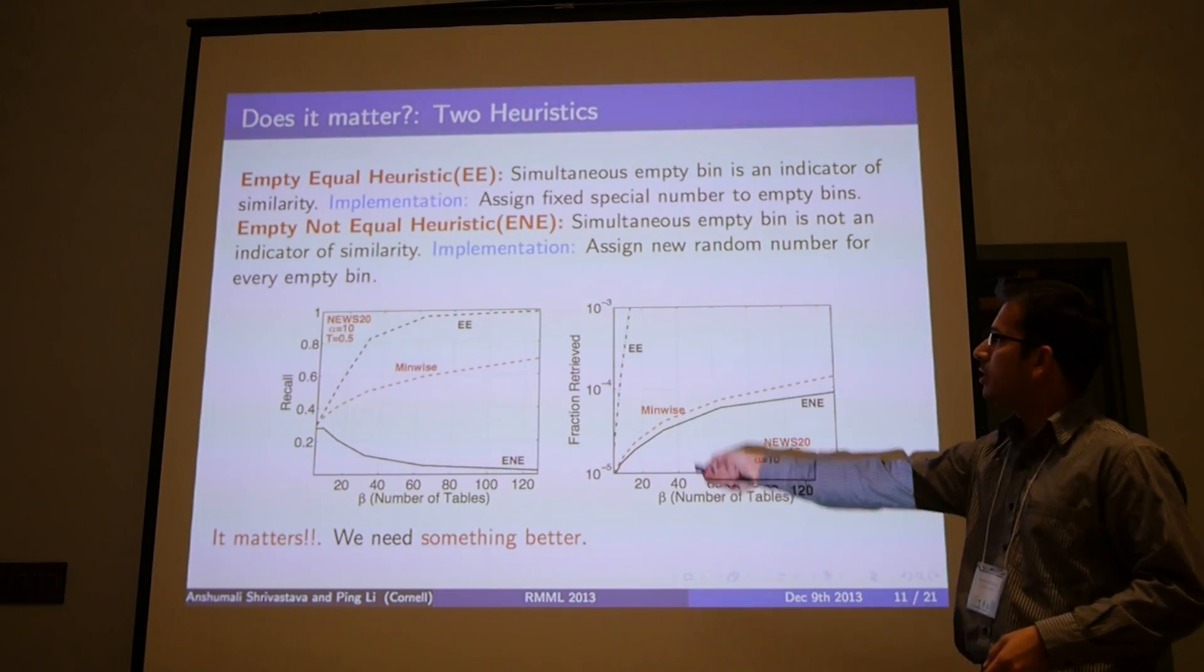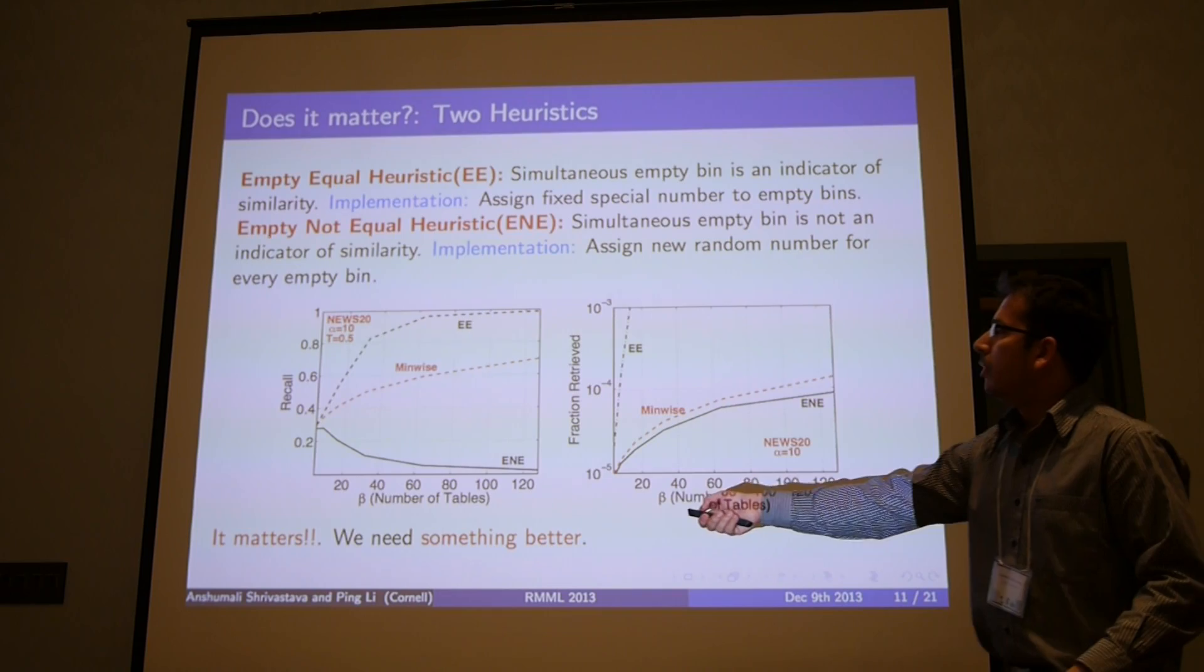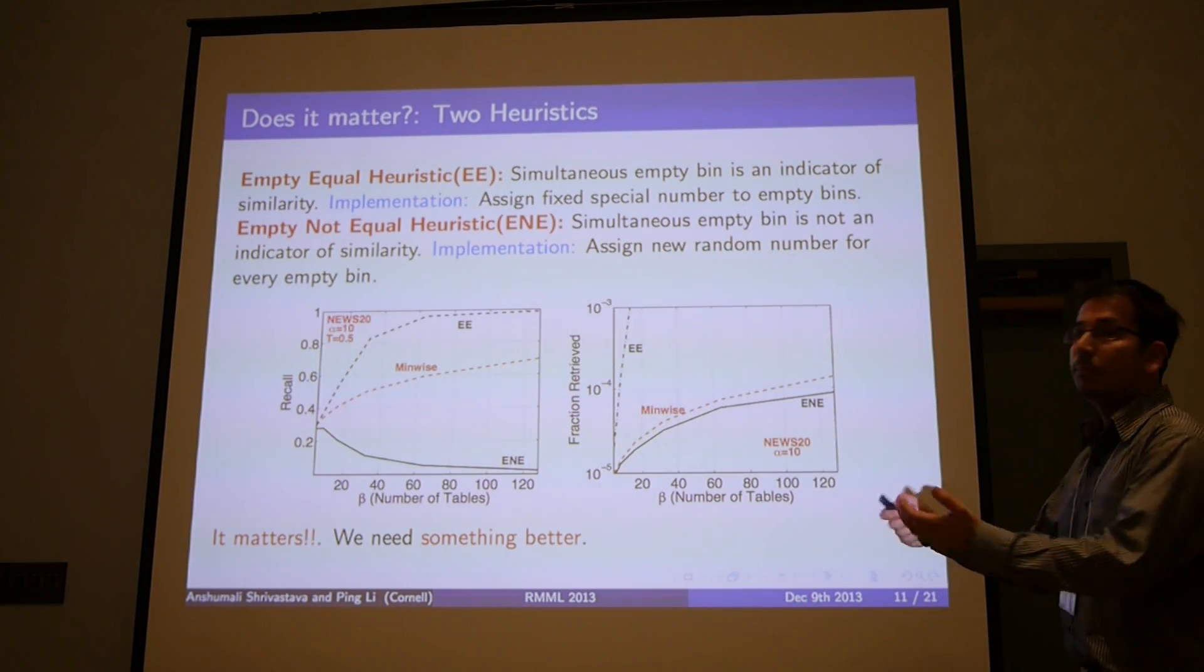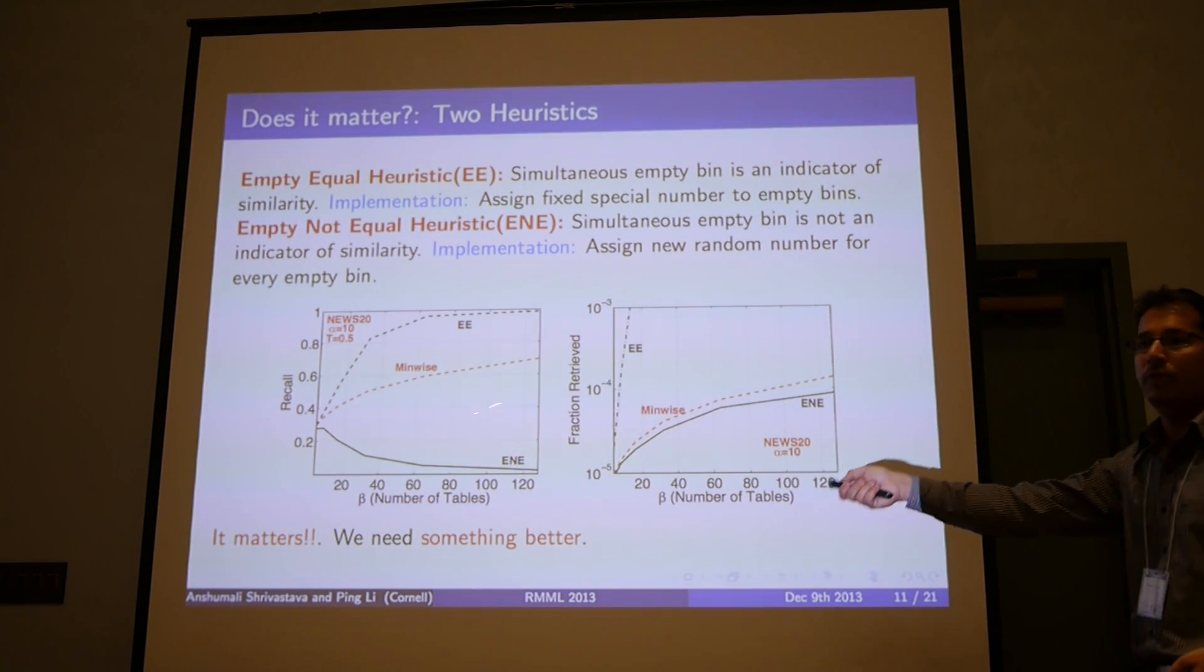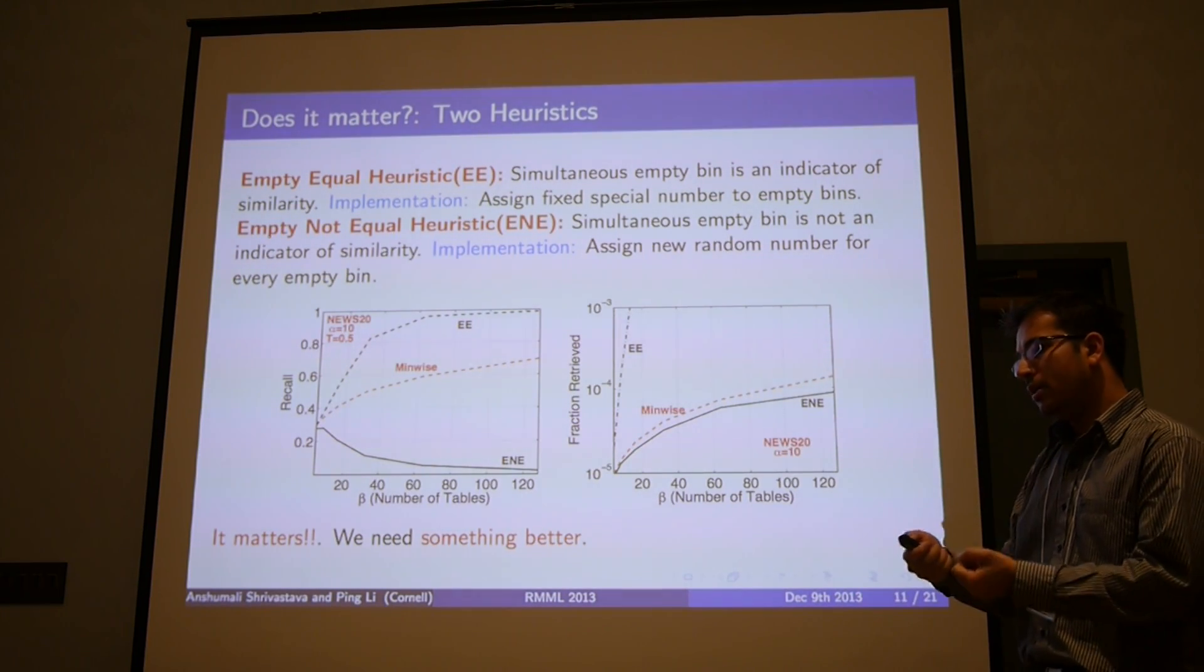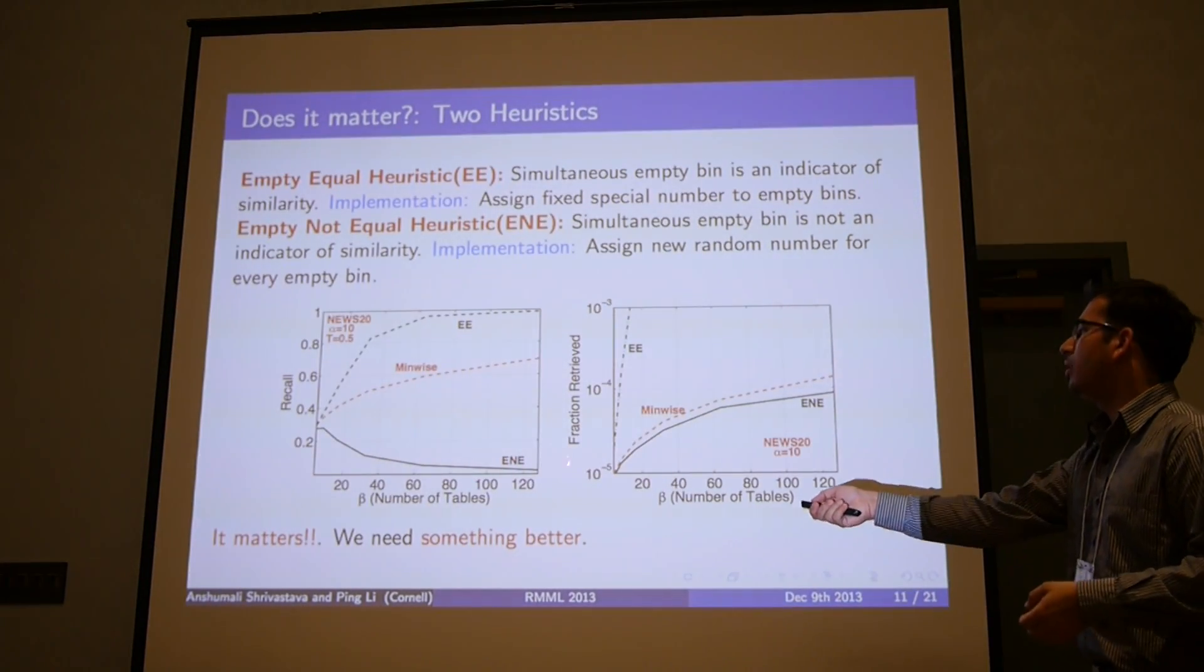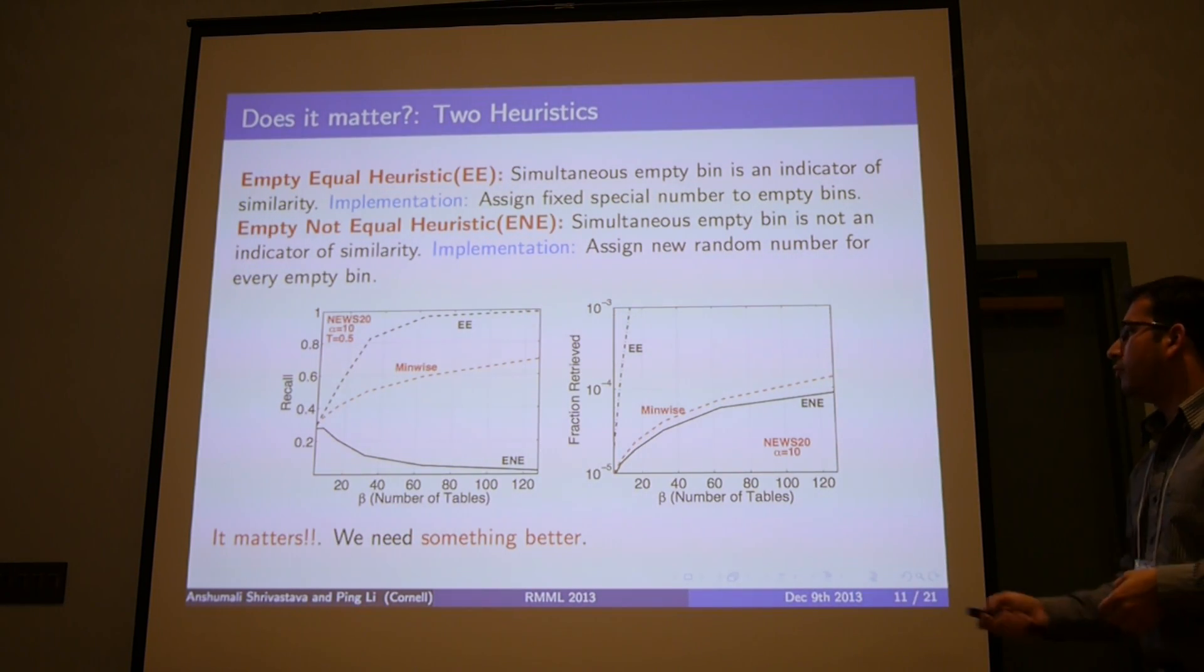Here is the implementation of LSH scheme on News20 dataset. I am using these many number of tables, and I am using α, which is the number of concatenations, which is equal to 10. I am plotting the recall of all the neighbors which are greater than the threshold of similarity threshold of 0.5, and here I am plotting the number of points retrieved. I can see that the behavior of empty equal and empty not equal is very different from the behavior of minwise hashing. It is expected because I am saying that the simultaneous empty is an indication of similarity where it could just be because of an indicator of sparsity. It actually retrieves everything, and no wonder it has better recall, whereas empty not equal scheme just does the opposite. It seems like it matters and we need some better way to fix it.